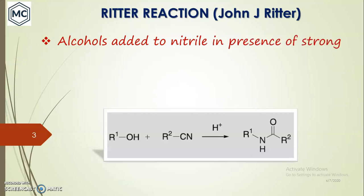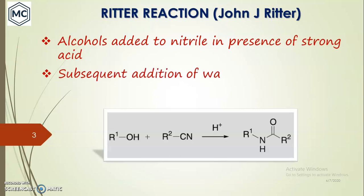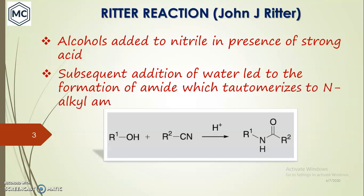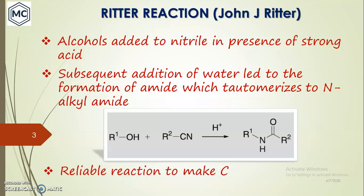The Ritter reaction is an example of a carbon-nitrogen bond forming reaction. In this reaction, an alcohol is added to a nitrile in the presence of a strong acid. Subsequent addition of water leads to the formation of an amide, which tautomerizes to give an N-alkyl amide. It is a reliable reaction to make carbon-nitrogen bonds.